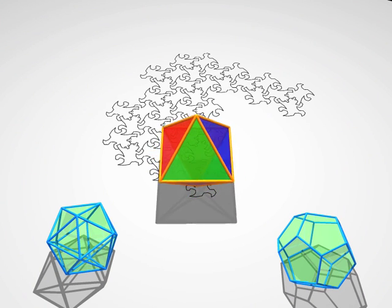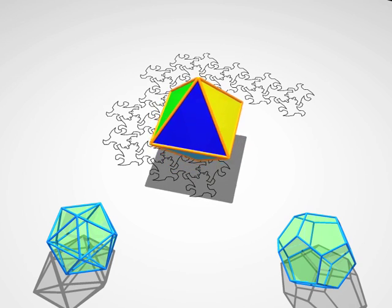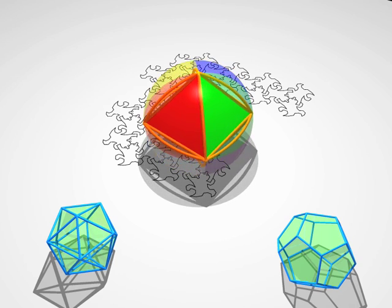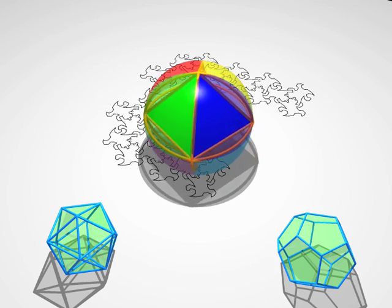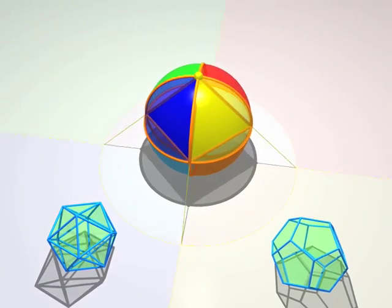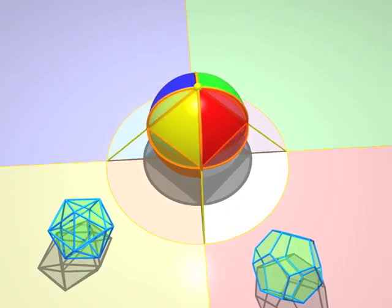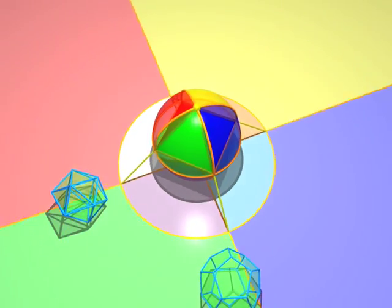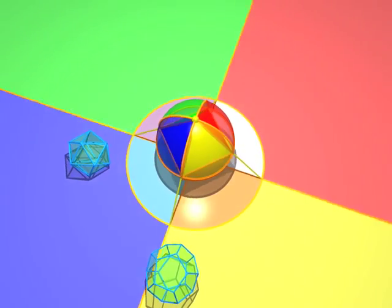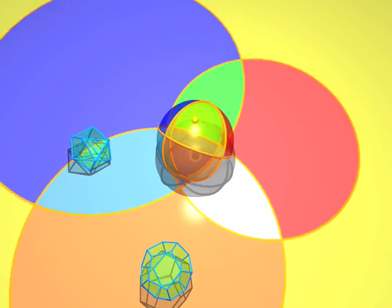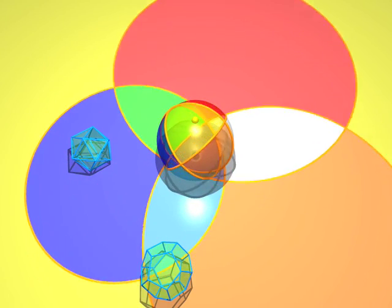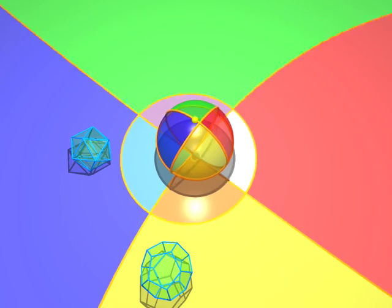And now, here comes an octahedron. You see the eight colored faces. Look how the projections of the edges are arcs of circles.